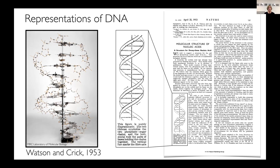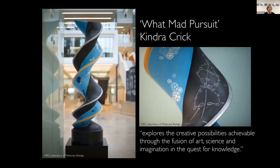The granddaughter of Frances and Odile Crick, Kendra Crick, is an artist who has taken inspiration from her grandparents and created a sculpture of double-stranded DNA, which is now located just outside this room in the LMB. This piece is called What Mad Pursuit, and to quote Kendra Crick: it explores the creative possibilities achievable through the fusion of art, science, and imagination in the quest for knowledge.